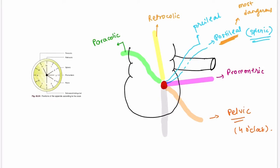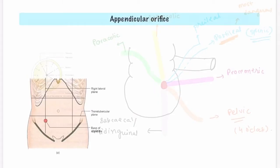The last is the 6 o'clock position, or the sub-cecal or mid-inguinal position, where the appendix lies below the cecum and points towards the inguinal ligament. This is all about the positions of the appendix. It is a very important question for your university exams.